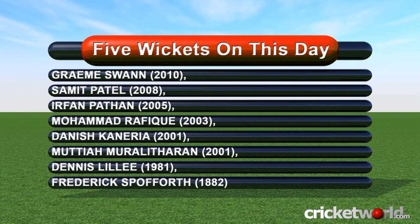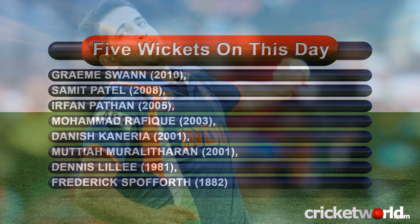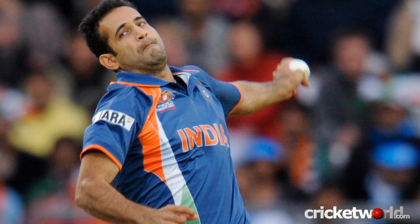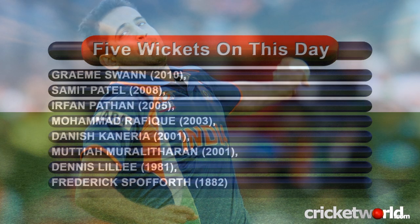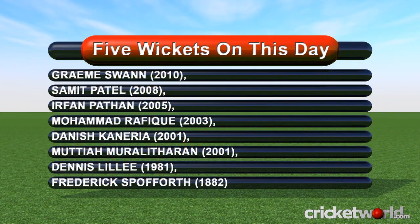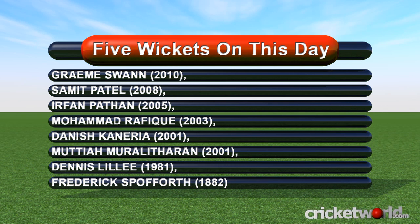Moving on to 5-wicket hauls taken today: in 2005, Urfan Patan took 5 for 27 for India against Zimbabwe in a tri-series ODI in Harare. India won by 161 runs, with Zimbabwe rather embarrassingly bowled out for just 65.